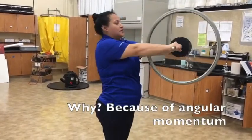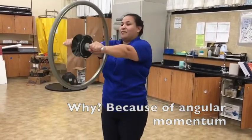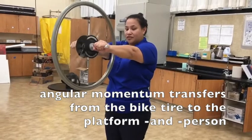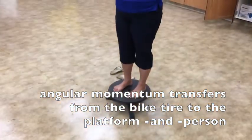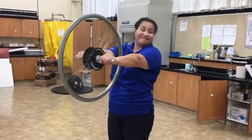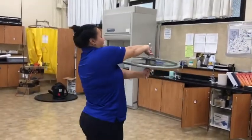Why? Because there's this thing called angular momentum where it transfers. That's right, angular momentum transferred from the bike tire to the person and platform. This is all happening because of the conservation of angular momentum.